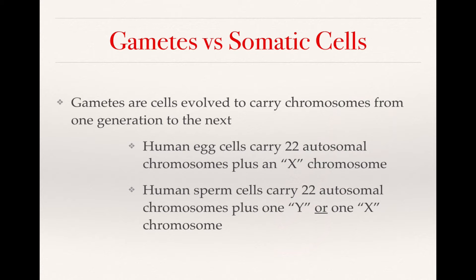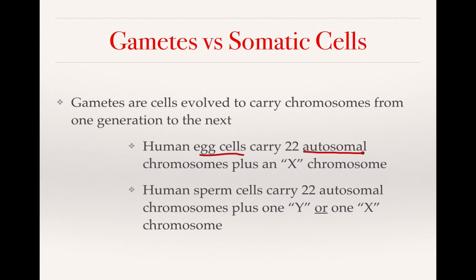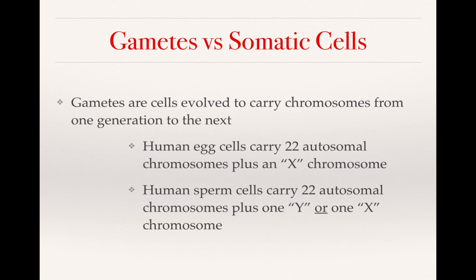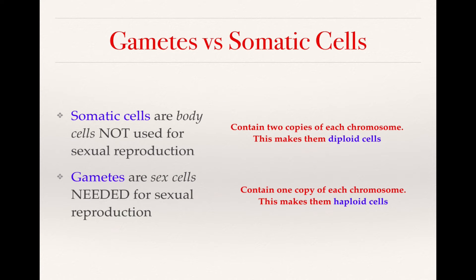Gametes have evolved to carry chromosomes from one generation to the next. A human egg cell carries 22 autosomal chromosomes plus an X chromosome. Egg cells come from females, and females don't have Y chromosomes. Sperm cells carry 22 autosomal chromosomes plus either a Y chromosome or an X chromosome, so it's the sperm cell that determines the sex of the zygote. Somatic cells are body cells containing two copies of each chromosome — homologous chromosomes — making them diploid.